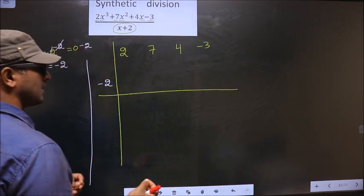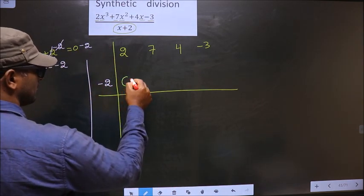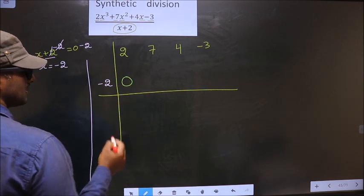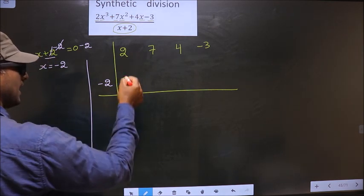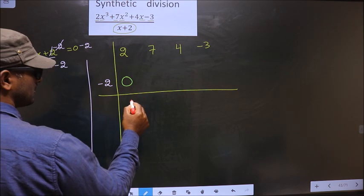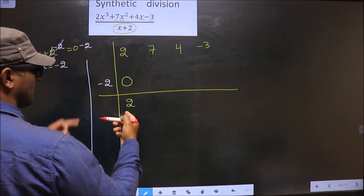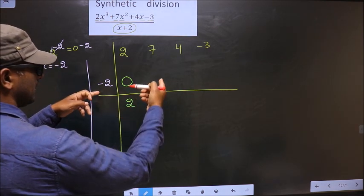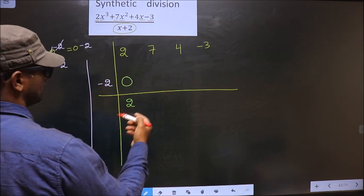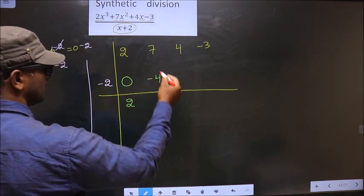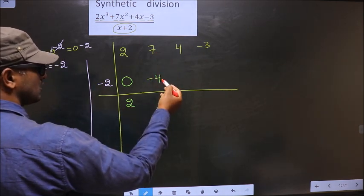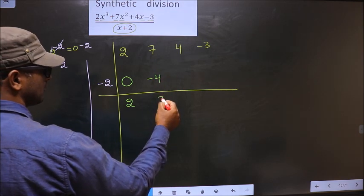Now we start by placing 0 here. So now you put 0 here. Now add these 2. 2 plus 0, 2. Now multiply these 2 and write here. So minus 2 into 2 is minus 4. Now add these 2. 7 plus minus 4 is 3.